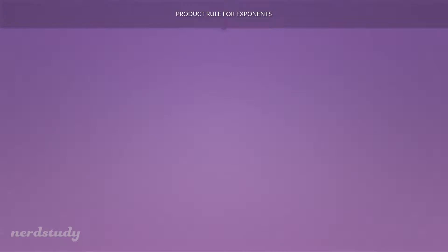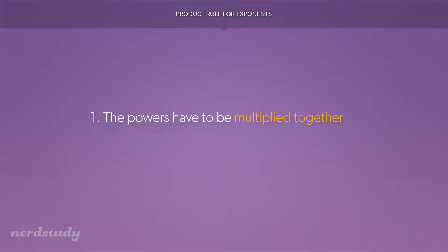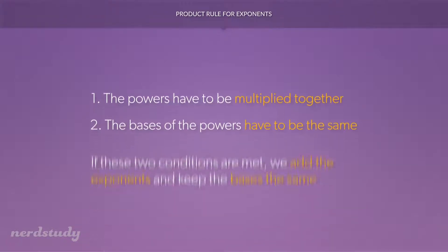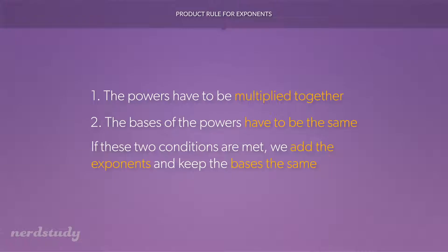Today we're going to be learning about the product rule for exponents. The product rule states that when two powers are being multiplied together and the two powers have the same base, then all you have to do is add the exponents together and keep the base the same.